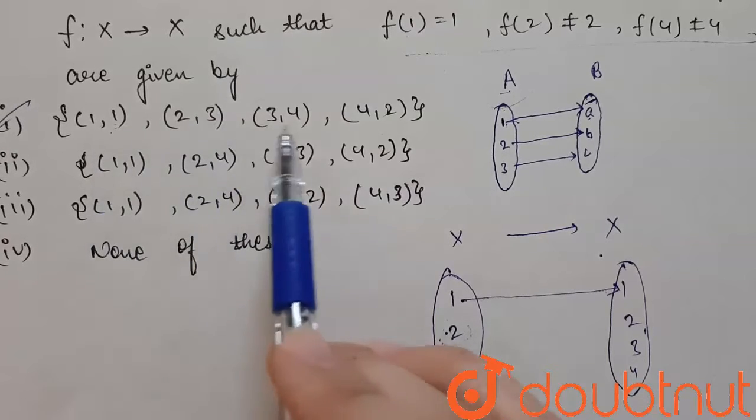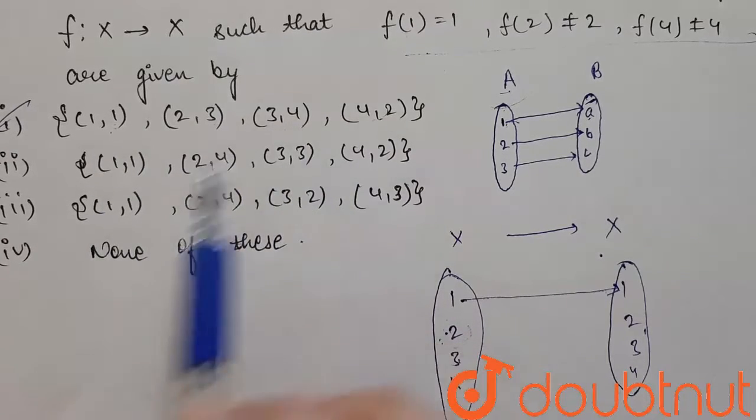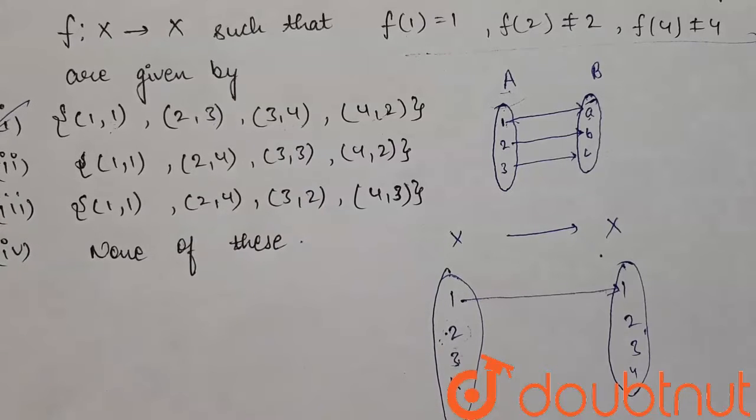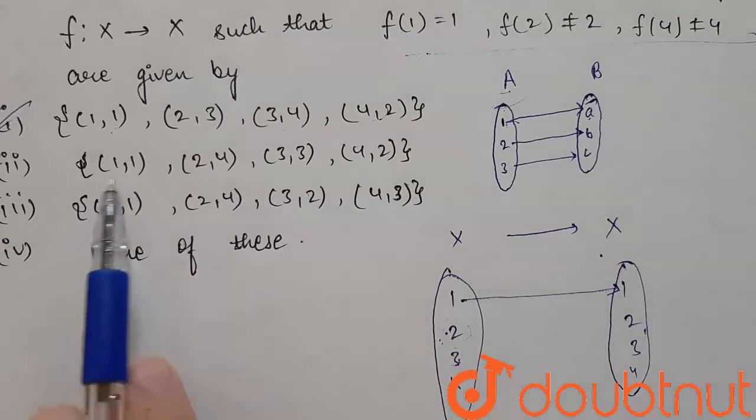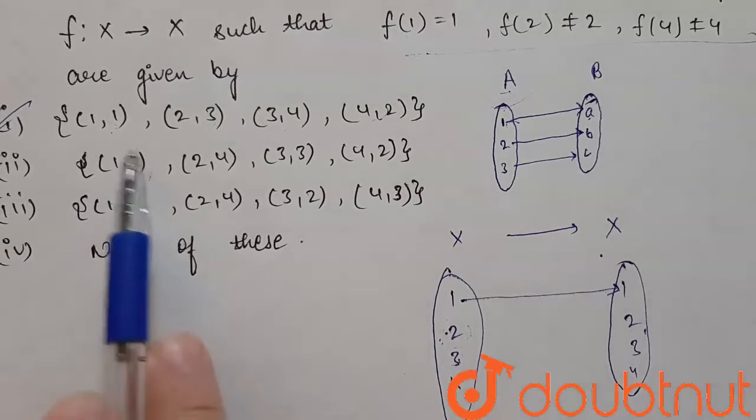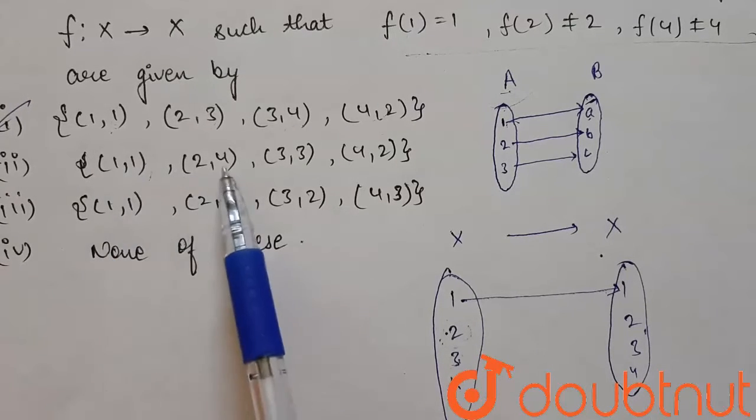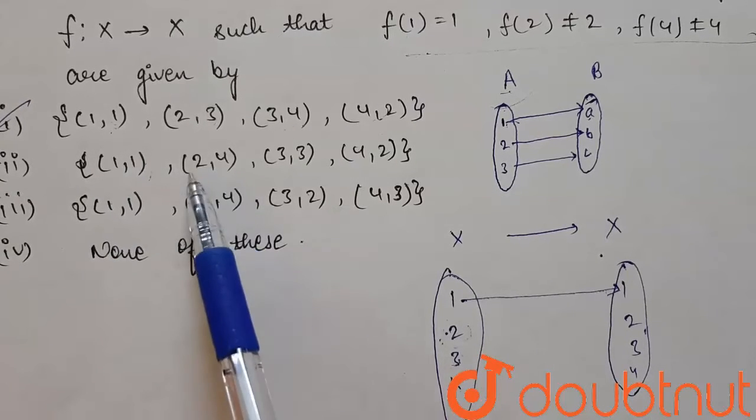So this option is correct as it is satisfying all the conditions and all the elements are being covered: 1, 2, 3, and 4. Now let's check the second option. Here also 1 is connected to 1, which was a restriction, so it is getting satisfied.